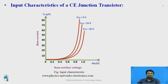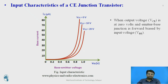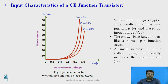The input characteristics is the plot of base-emitter voltage VBE versus base current IB, keeping the collector-to-emitter voltage VCE constant. Initially, VCE is kept at zero volt, and the curve looks similar to the characteristics of a diode. After 0.7 volt, the base current IB suddenly increases. When VCE is at zero volt, the emitter-to-base junction is forward biased by VBE and acts like a normal PN junction diode, so a small increase in VBE will increase IB.